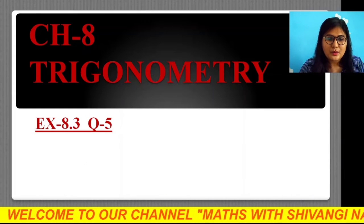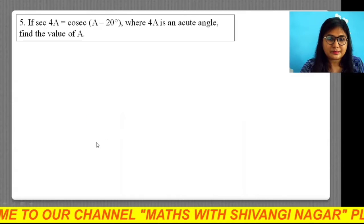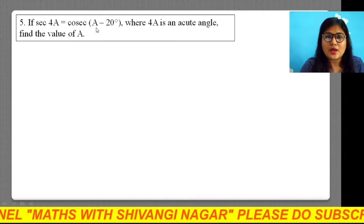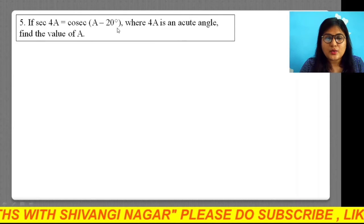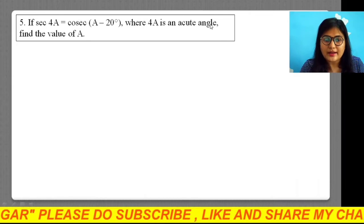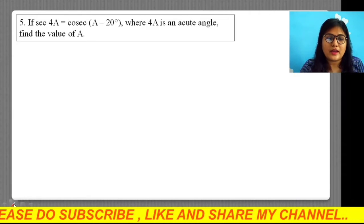The question says if sec 4A is equals to cosec (A - 20°), where 4A is given to us that it is an acute angle, then we have to find the value of A.